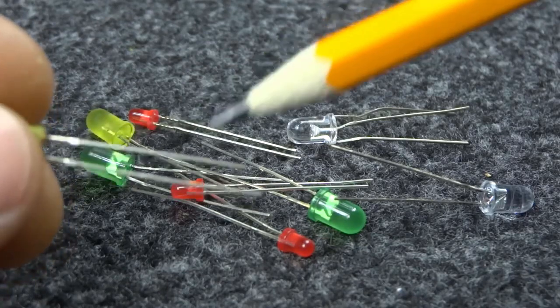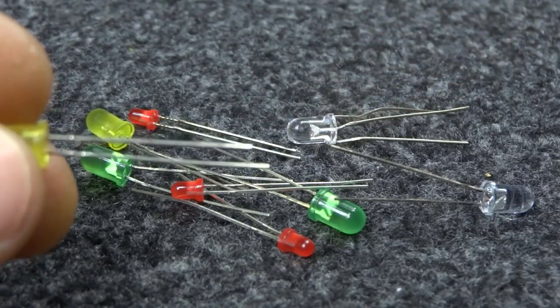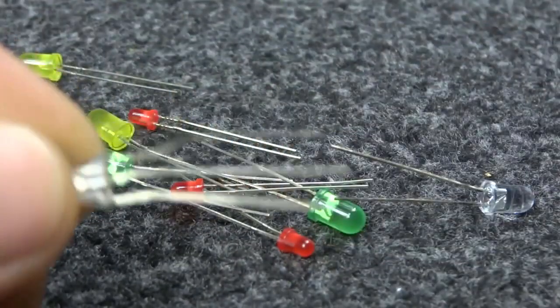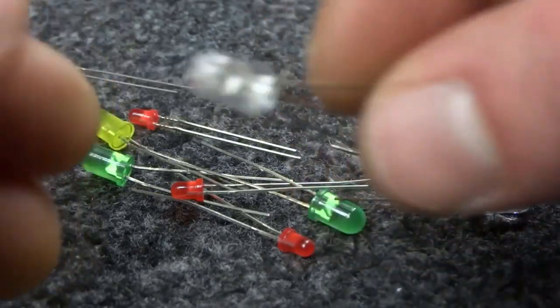Each diode has negative and positive legs. And same as electrolytic capacitors negative leg is shorter. They can also have three legs. That's actually two different colors of LEDs in one package, with one leg shared.